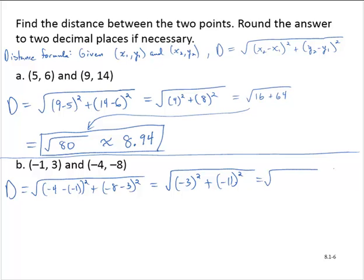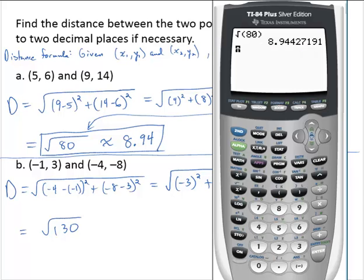So that's the square root of 9 plus 121, which is the square root of 130. Oops, wrong button. The square root of 130 is approximately 11.40.